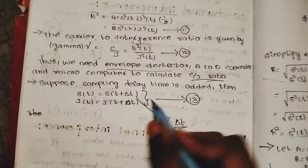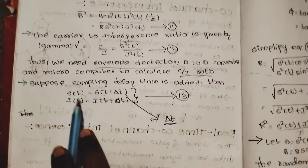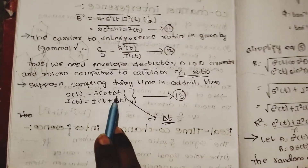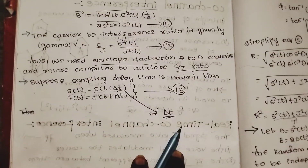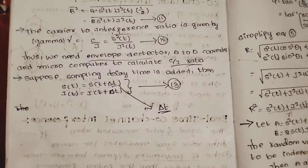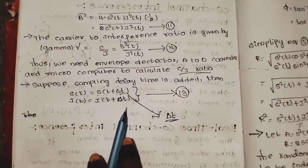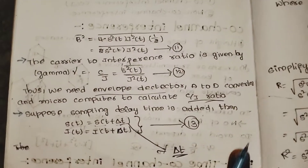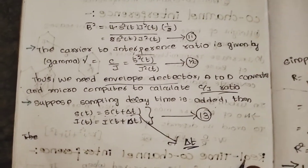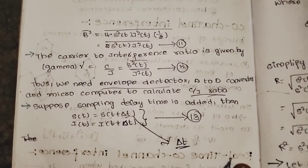We have the equation for S(t) and I(t) with the sampling time delay delta T applied. That is all about this video. If you like the video, please like, share, and subscribe to the channel. Thank you.